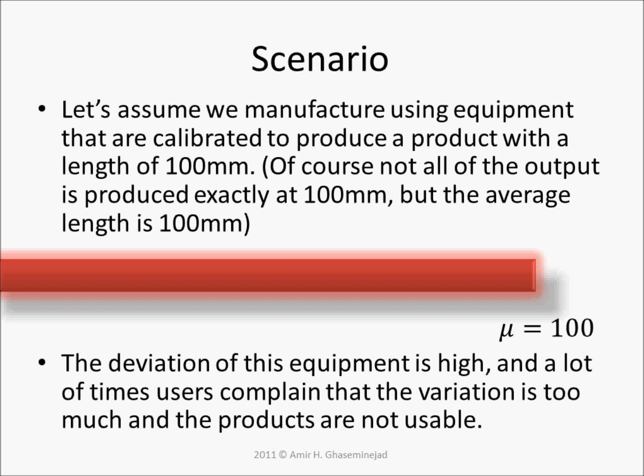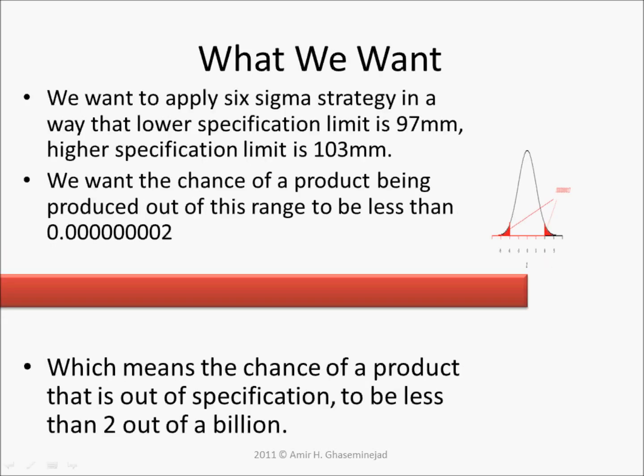The deviation of this equipment is high, and a lot of times users complain that the variation is too much and the products are not usable. We want to apply Six Sigma strategy in a way that the lower specification limit is 97 millimeters and the higher specification limit is 103 millimeters.